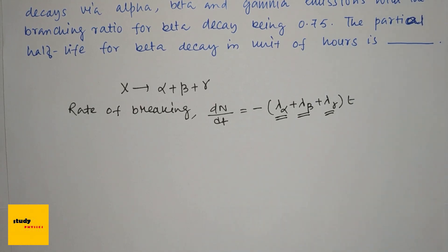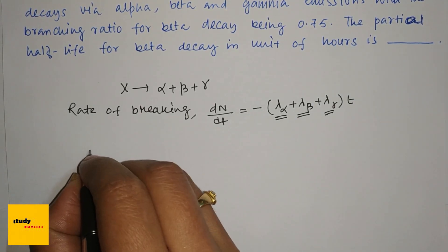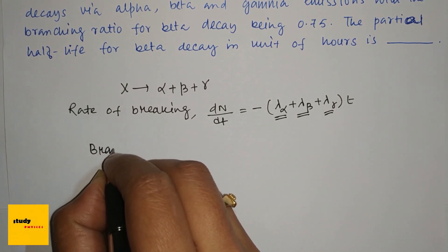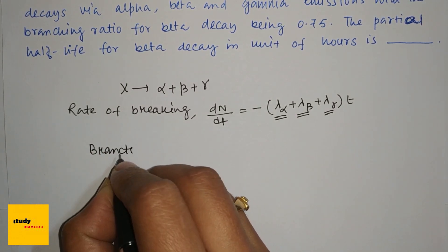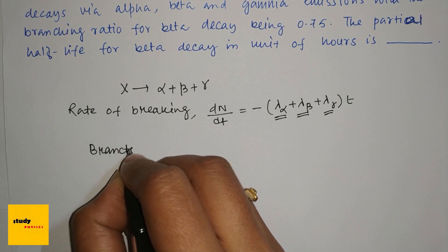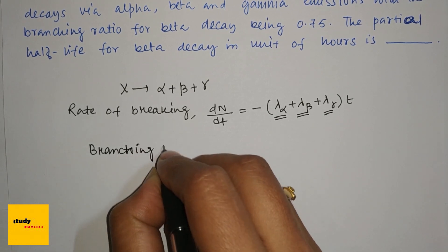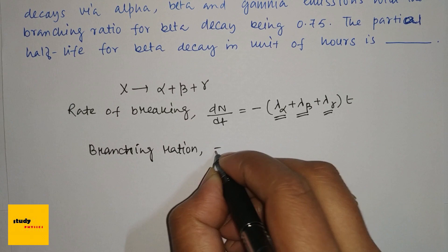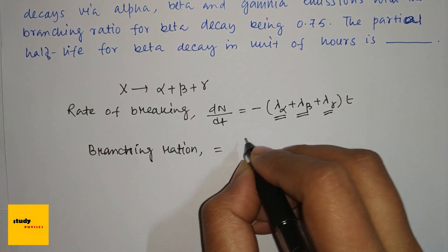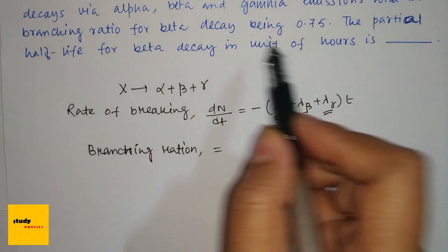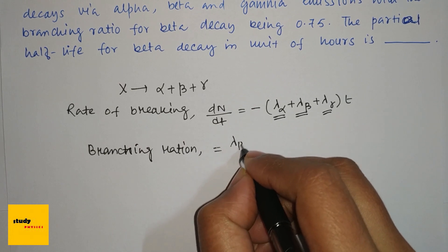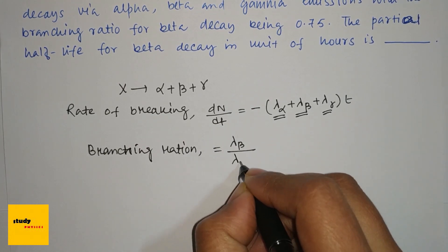So the branching ratio is defined for beta decay. That means lambda beta divided by lambda X, where lambda X is the decay constant of element X.